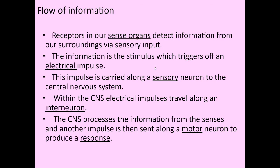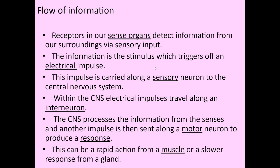The brain will send information down the interneurons to the motor neurons, to the effectors — the things that cause something to change in your body. In this case, that would be the muscles of your forearm, which would lift your hand away from the hot thing. That is the response. This can be quite a rapid action from a muscle or a slower response from a gland.